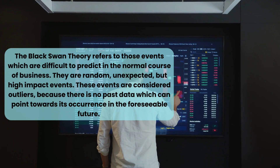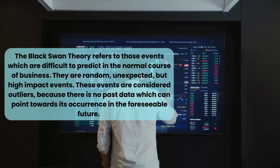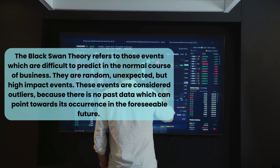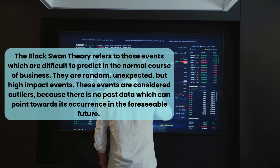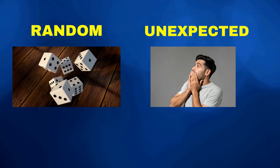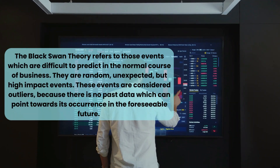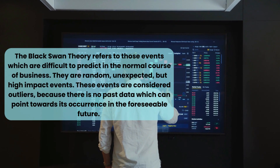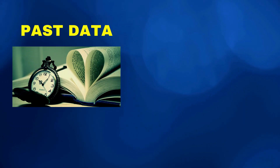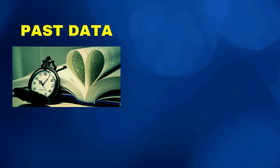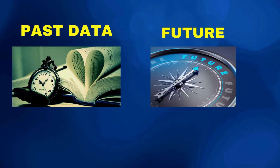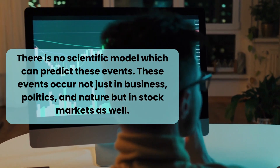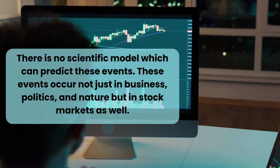The black swan theory refers to those events which are difficult to predict in the normal course of business. They are random, unexpected, but high-impact events. These events are considered outliers because there is no past data which can point towards its occurrence in the foreseeable future. There is no scientific model which can predict these events.